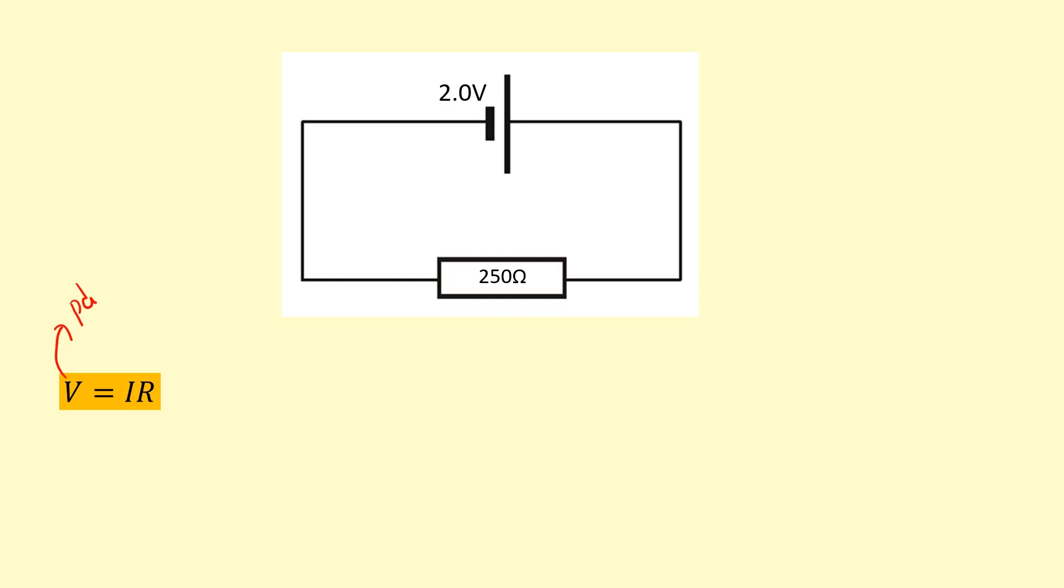So V stands for potential difference and is measured in volts. I is current in amps, and R is resistance in ohms.